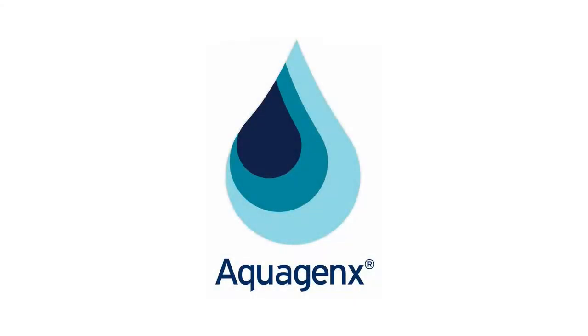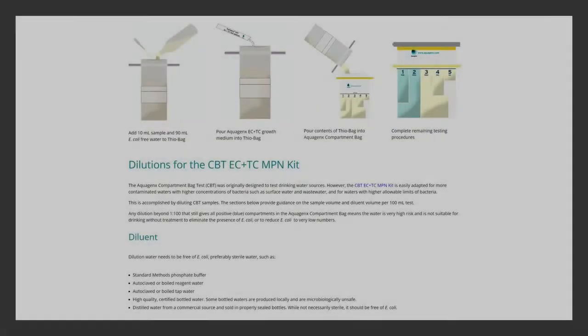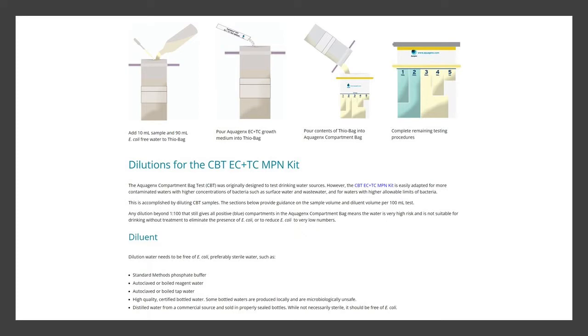This video shows you how to use the Aquagenx CBT EC plus TC Most Probable Number Kit to test drinking water. For instructions on how to use the MPN kit to test surface and waste waters, visit our CBT Dilutions webpage.